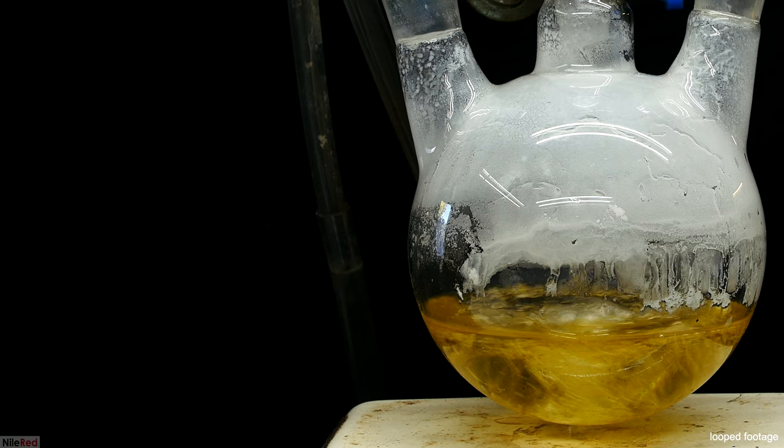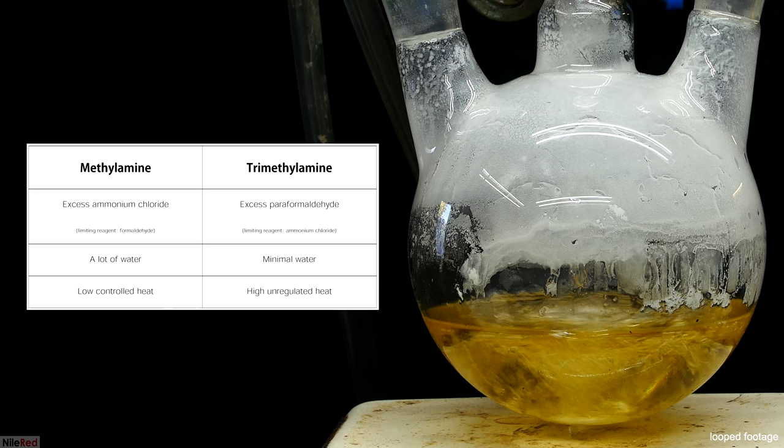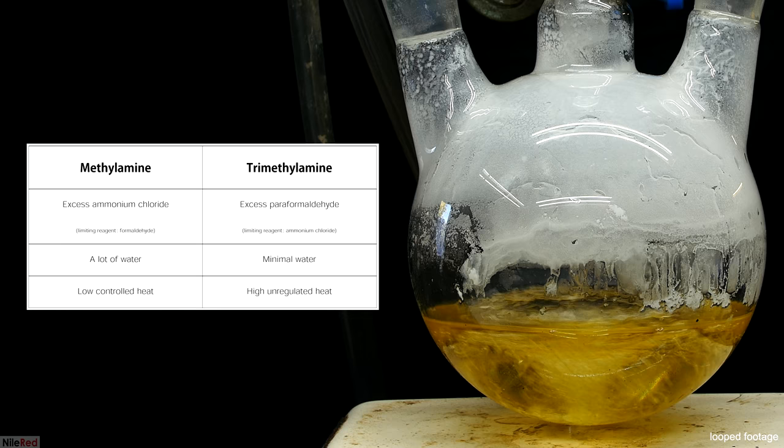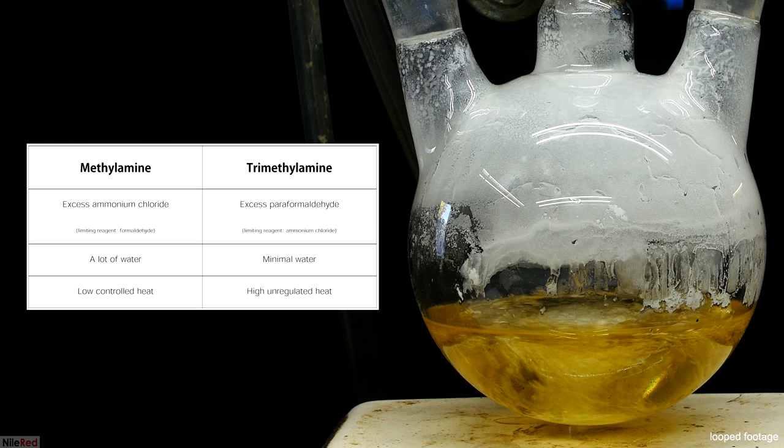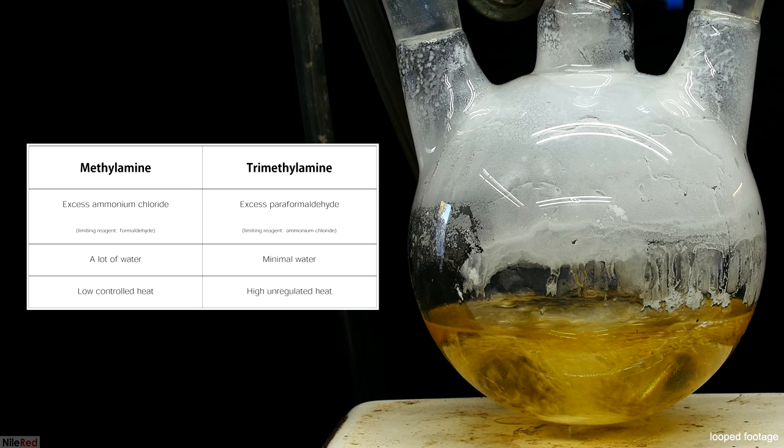When the two reactions are compared, we can see that the conditions are quite different. For methylamine, I used an excess of ammonium chloride, a lot of water, and low, carefully controlled heat. For the trimethylamine, I used an excess of paraformaldehyde, a minimal amount of water, and relatively uncontrolled high heat. For the methylamine, the excess ammonium chloride was important because it statistically reduces the likelihood of the di- and tri- product. The di- and tri- product form when the methylamine product goes on to further react with more formaldehyde.